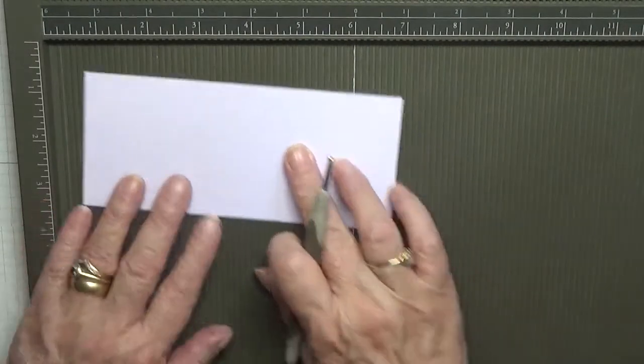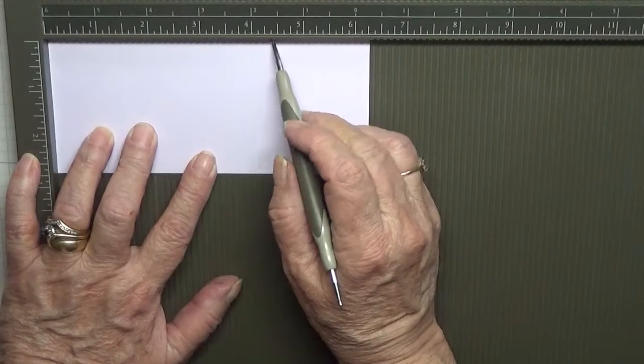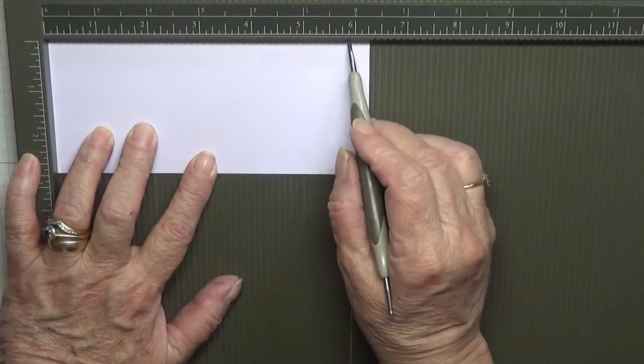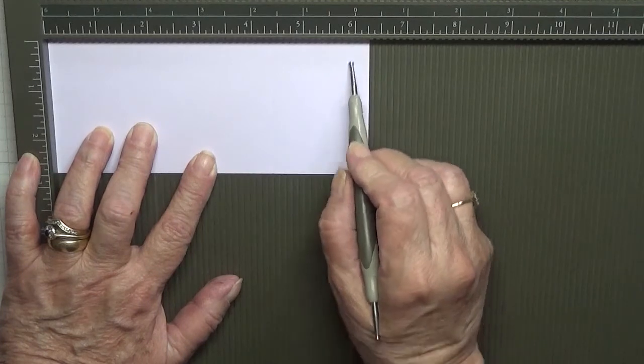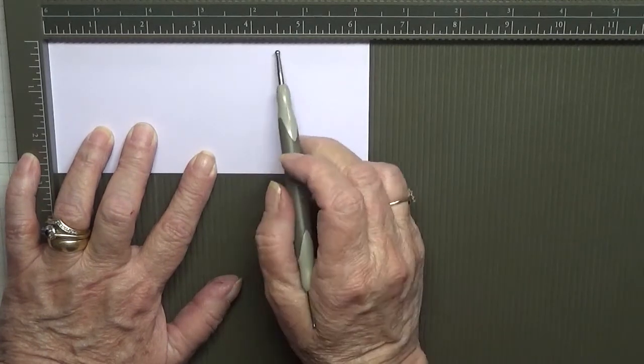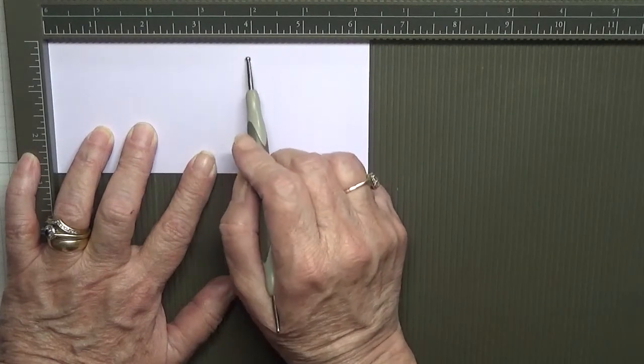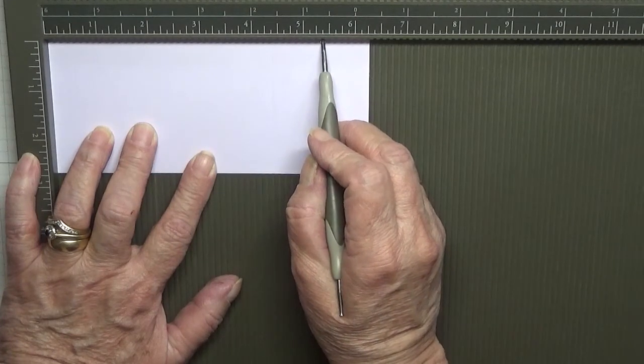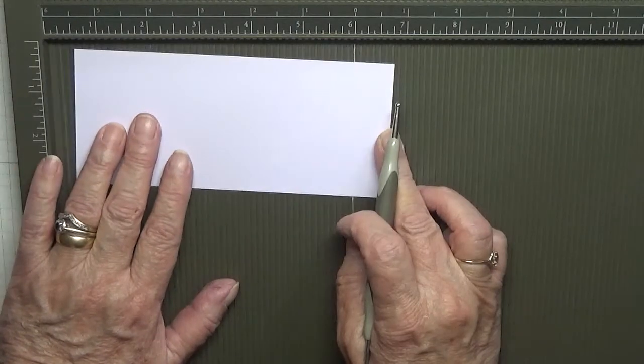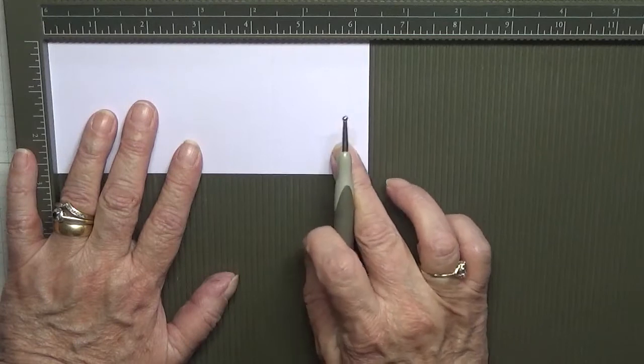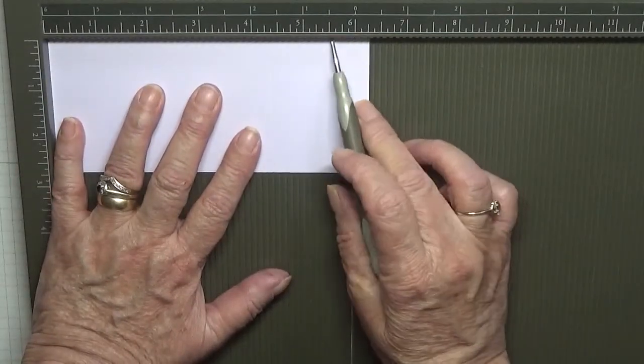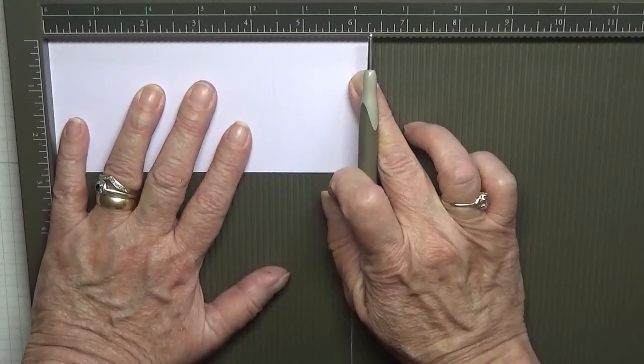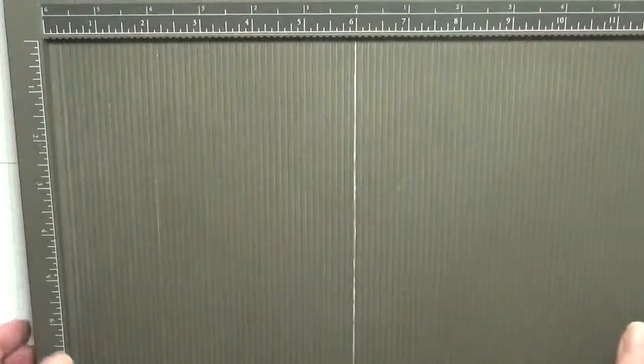I have scored at four and three eighths and five and seven eighths. In America you'll want to score this at three and seven eighths by five and three eighths, because if you don't take the half an inch off it'll be too thick. So yours will want to be five and three quarters. That's all our scoring done.